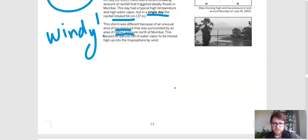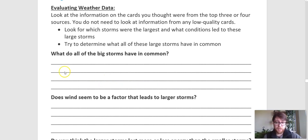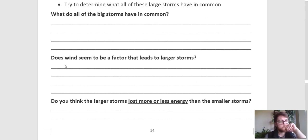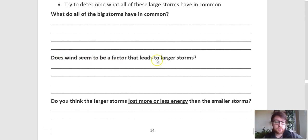So our questions for us to answer: what do all these big storms have in common? I'm not going to answer that one for you — you can go back in the video, find the different examples, and piece together what you think they all have in common. Our second question: does wind seem to be a factor that leads to larger storms? I think you should go back through the video, pause when I go to each of those cards, and decide for yourself — does wind seem to be a factor?